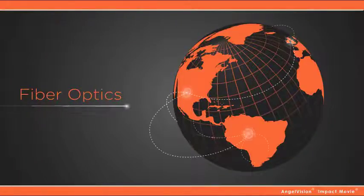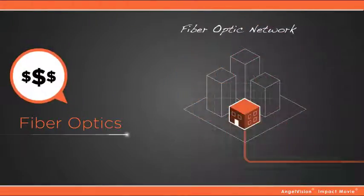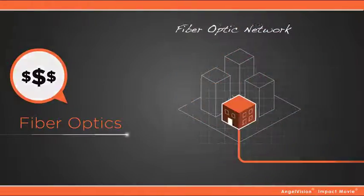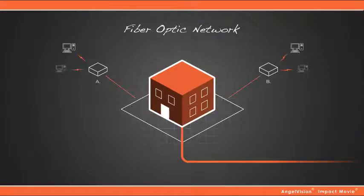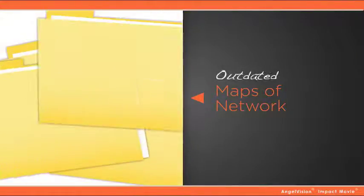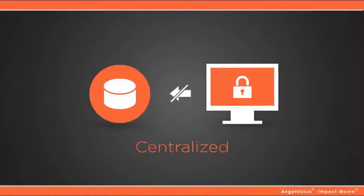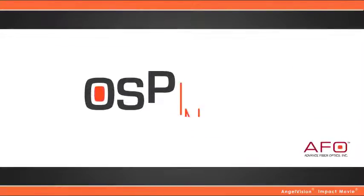Fiber-optic technology has redefined almost every aspect of modern society. To capitalize on that, you've invested a vast amount of time and money building a fiber-optic network. It's probably your most important asset. So where is it? Maybe you have maps of your network, but when were they last updated? Is your network data complete and current? Is it centralized, so anybody who needs it has access at any time?